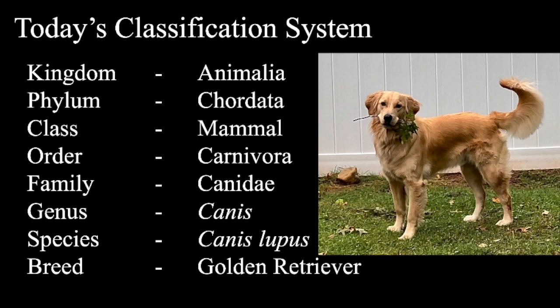Here's my golden retriever, Charlie. He belongs to the animal kingdom. The phylum is Chordata — my dog is a vertebrate animal, so he has a backbone. The class is mammal; he's warm-blooded. The order is Carnivora — carnivorous animals — but they're actually more omnivorous, meaning he eats plants and meat. Members of this classification are distinguished by powerful jaws and teeth adapted for stabbing, tearing, and eating flesh.